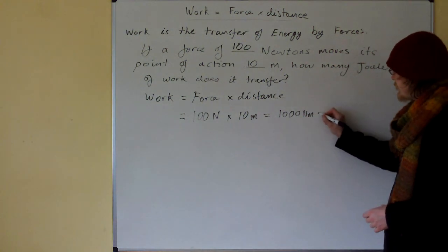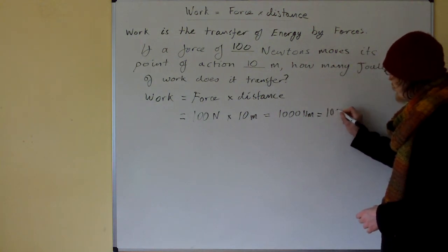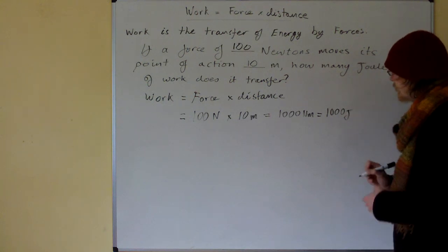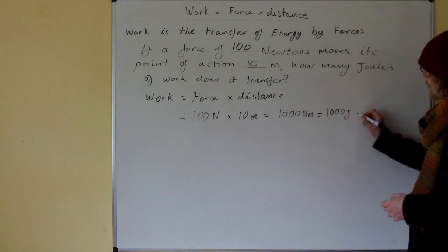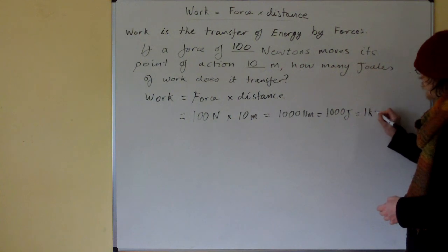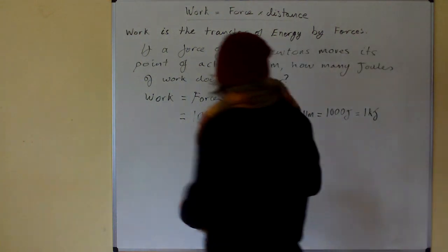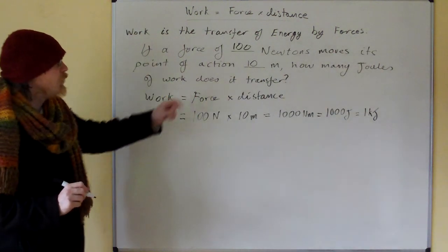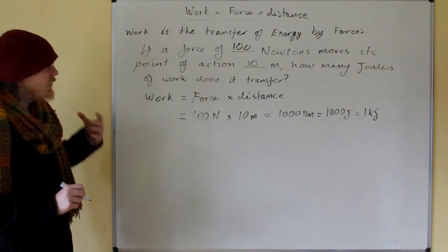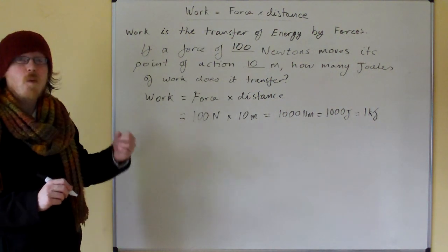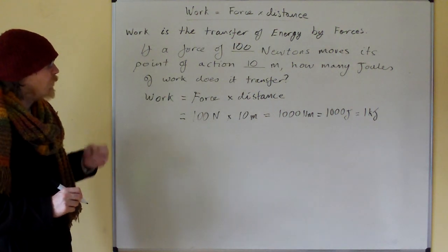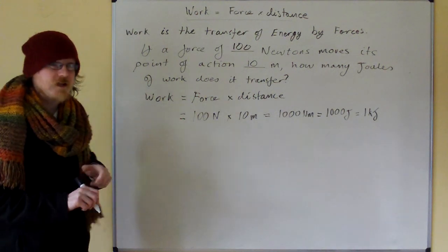1,000 newton meters is equivalent to 1,000 joules and 1,000 joules equals 1 kilojoule. So basically, if we have a force of 100 newtons moving 10 meters, it does 1,000 joules of work, 1 kilojoule of work. 1 kilojoule of energy is transferred.